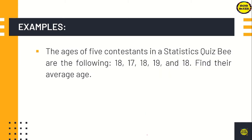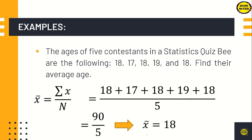Another example: the ages of 5 contestants in a statistics quiz bee are 18, 17, 18, 19, and 18. Find the average age. Using the formula, mean = Σx/n. Add the data set: 18 + 17 + 18 + 19 + 18 = 90, divided by 5. The mean is equal to 14. That is the process for solving the mean.